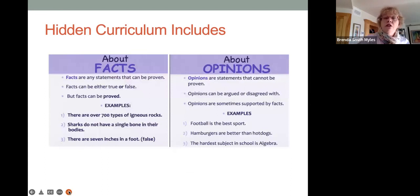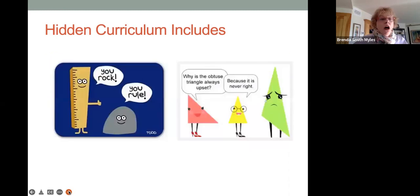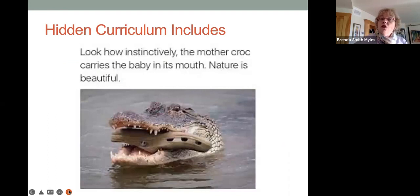The hidden curriculum also includes facts and opinions. Unless otherwise taught, many autistic people think that facts are something that they believe and opinions are things that they don't believe and therefore are wrong. And so teaching what is factual and what is an opinion is extremely helpful and essential in life. Also, the hidden curriculum contains jokes and riddles that use a lot of non-literal language. The hidden curriculum also contains words that have multiple meanings, as illustrated here. Look how instinctively the mother croc carries the baby in its mouth. Nature is beautiful.